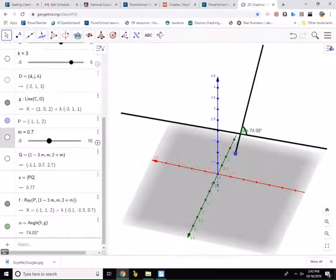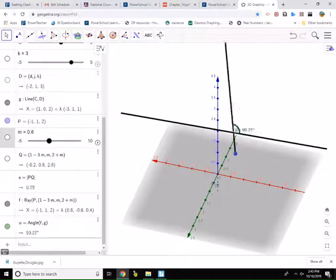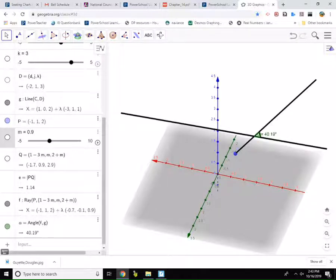And you can see if I move lambda, or M, it's going to change where I am on the line. And you can see the angle formed between the line and my ray is changing if I move to a different spot on the line.